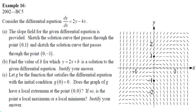The next question is 2002 BC5, which is also part of the homework. The slope field for the given differential equation is provided. Part A: Sketch the solution curves passing through (0,1) and (0,-1). Follow the slope field path from each point. One important note: College Board will not give you credit if you stop halfway — make sure your graph goes all the way edge to edge.